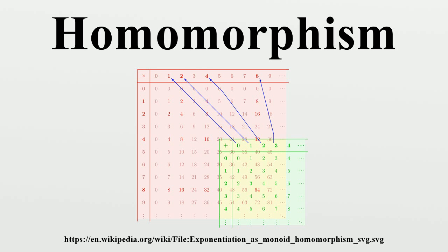For example, consider the natural numbers with addition as the operation. A function which preserves addition should satisfy f(a+b) = f(a) + f(b). For example, f(x) = 3x is one such homomorphism, since f(a+b) = 3(a+b) = 3a + 3b = f(a) + f(b). Note that this homomorphism maps the natural numbers back into themselves. Homomorphisms do not have to map between sets which have the same operations. For example, operation-preserving functions exist between the set of real numbers with addition and the positive real numbers with multiplication. Given the laws of exponents, f(x) = eˣ satisfies this condition: 2+3=5 translates into e²·e³ = e⁵.